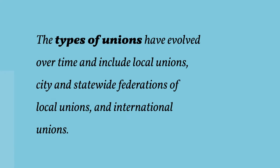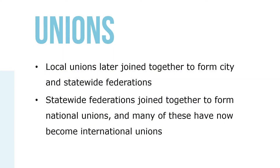The types of unions have evolved over time and include local unions, city and statewide federations of local unions, and international unions. Local unions later joined together to form city and statewide federations. Statewide federations joined together to form national unions, and many of these have now become international unions.